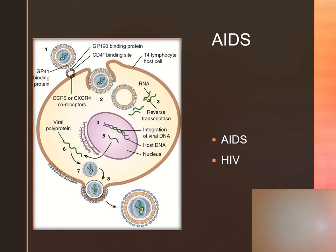HIV is transmitted through body fluids such as blood, semen, vaginal secretions, and breast milk. High risk factors to contract AIDS include unprotected sexual intercourse, multiple sexual partners, sharing of IV needles, non-autologous transfusions, and infected mother-to-infant transmission.